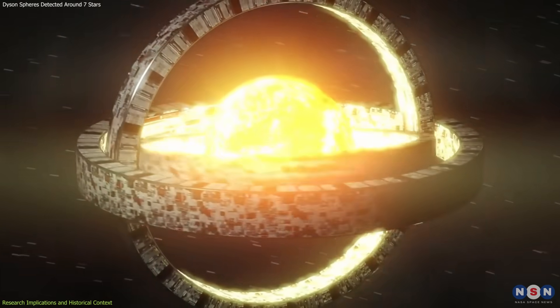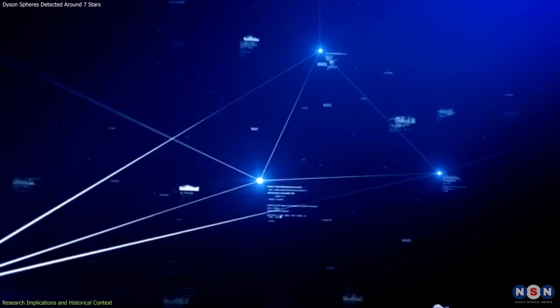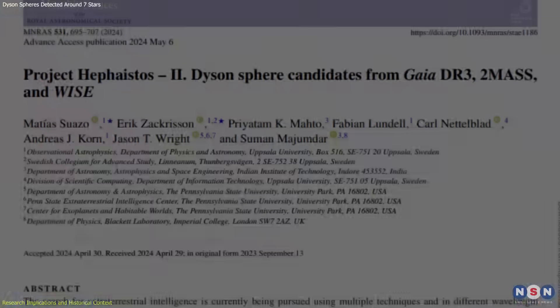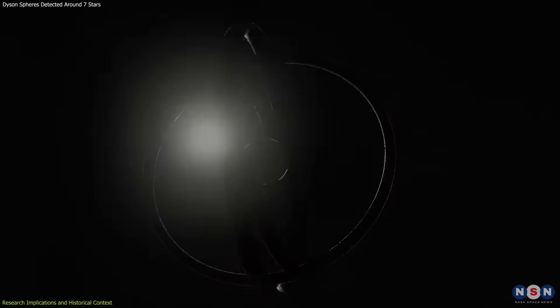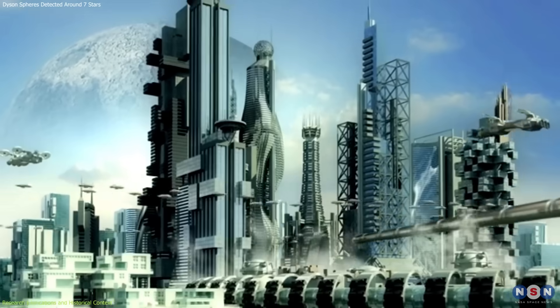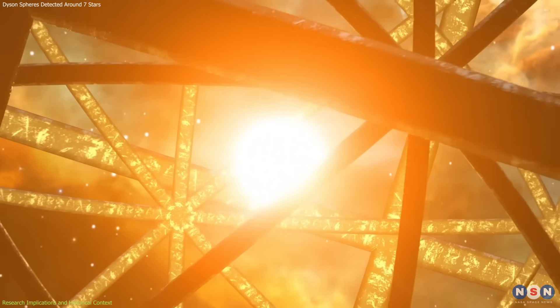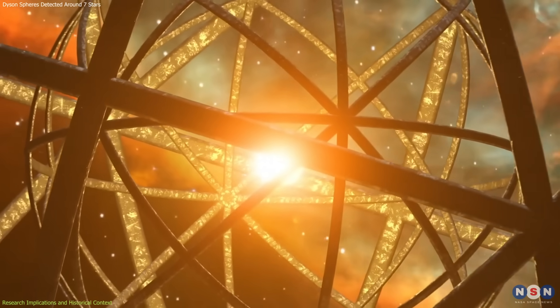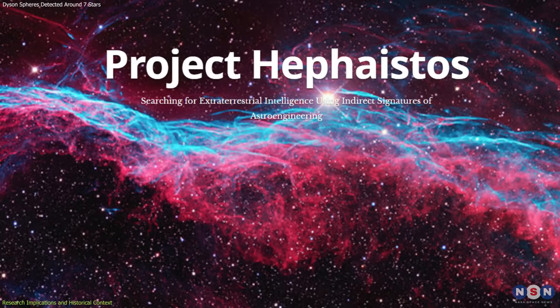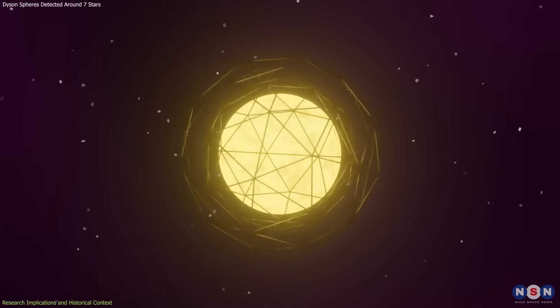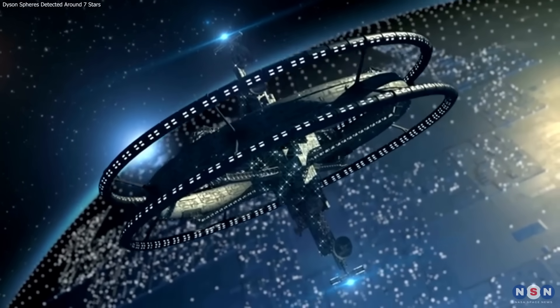Confirming the existence of Dyson spheres would require comprehensive data and rigorous analysis to rule out natural explanations. The scientific community must also replicate the findings using different methods and instruments to ensure their validity. While this process may take time, it is essential for establishing the credibility of the discovery and advancing our understanding of advanced extraterrestrial civilizations. In conclusion, the history of searching for Dyson spheres reveals the evolution of scientific inquiry and the continuous pursuit of knowledge about the universe. The recent research by Project Hephaistos represents a significant milestone in this journey, demonstrating the potential for modern technology and collaboration to uncover signs of advanced civilizations.